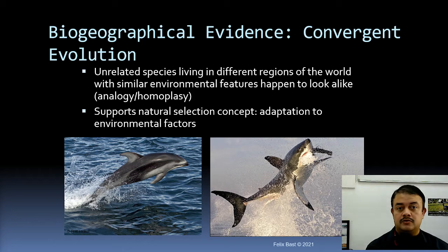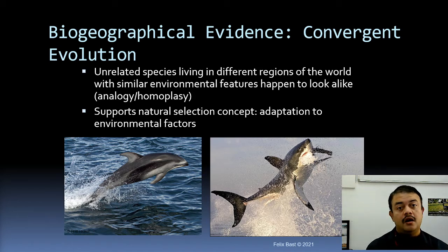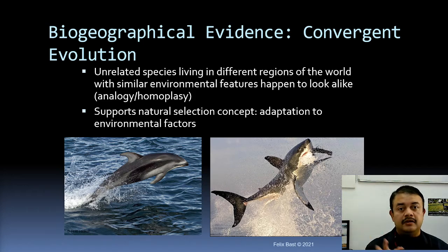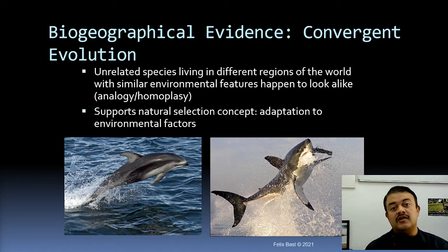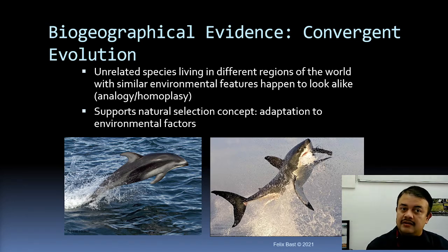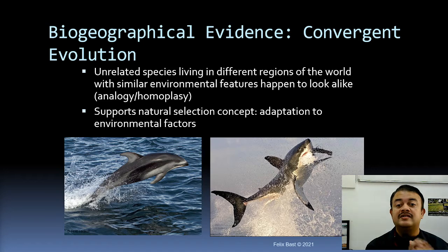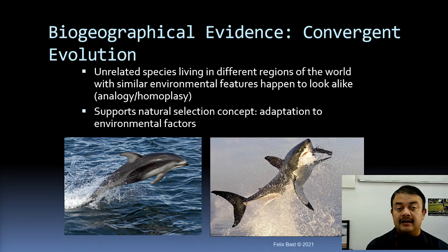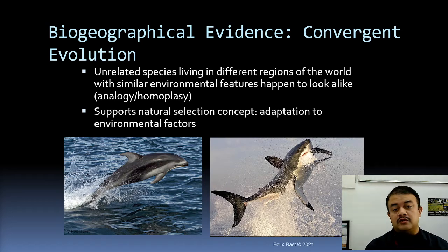The first level of evidence is biogeographic evidence, where we can see convergent evolution. Convergent evolution means evolving similar attributes even though there is no homology — unrelated lineages developing similar features. For example, butterfly wings and bird wings are a kind of convergent evolution. Unrelated species living in different regions with similar environmental features happen to look alike — this is analogy or homoplasy, which supports the natural selection concept of adaptation to environmental factors.